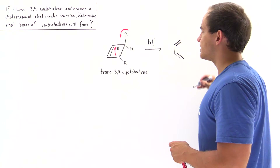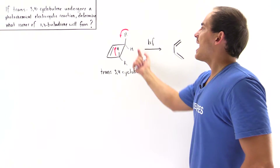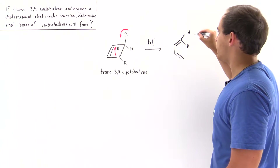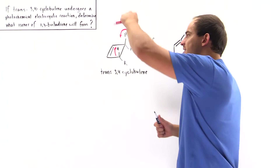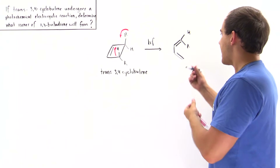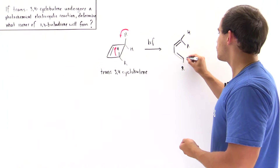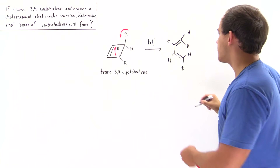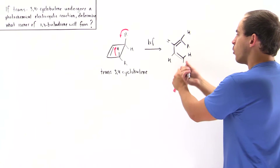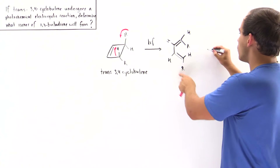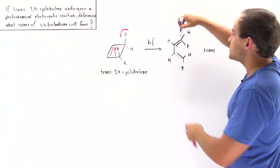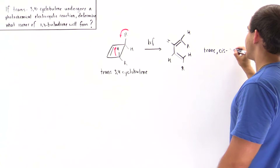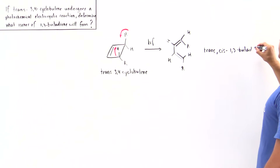We form two pi bonds. One carbon rotates so the R points in one direction and the H points in the other. On the second carbon, the H goes into the board and the R comes out of the board. So we have an H and H here. The H's are pointing opposite on one double bond — that's a trans double bond — while on the other double bond they point in the same direction, making it cis. So we get trans-cis 1,3-butadiene.